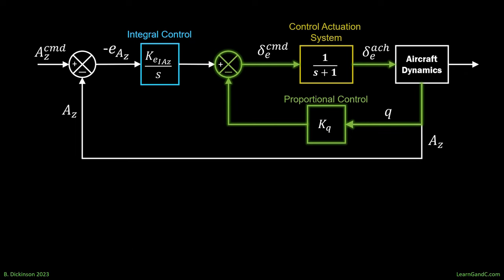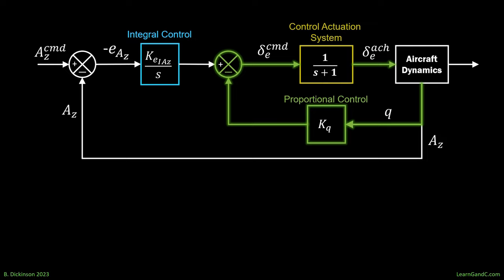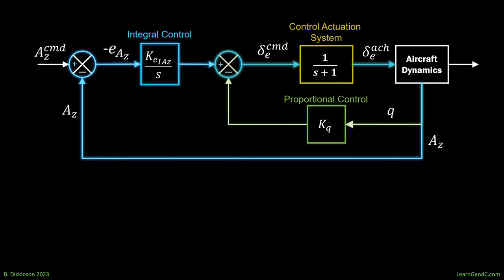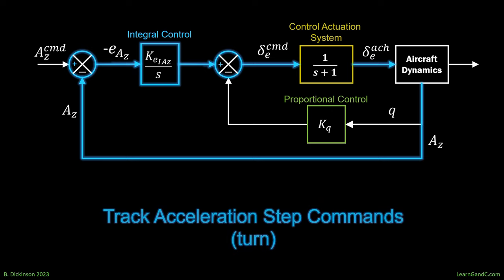So the purpose of the inner loop, the proportional control on pitch rate, is to dampen oscillation. This is the so-called artificial damping. We have to get the angular rates under control in order to maneuver. And this is increasingly important for highly maneuverable vehicles because they often are nearly unstable. The outer loop achieves the desired turning, or maneuver. This is accomplished with acceleration command tracking.